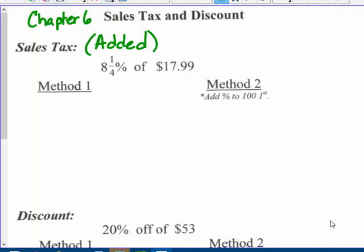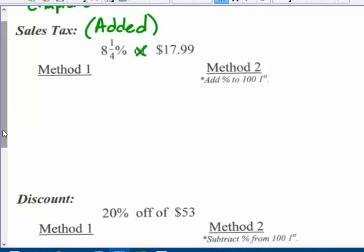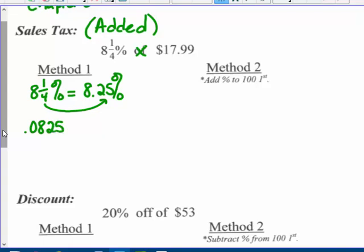I'm going to change my percent to a decimal and multiply, because of means multiply. Method one: eight and a quarter percent is the same as 8.25%. Changing this percent to a decimal, I divide by 100, moving two places to the left. So I get 0.0825 times my $17.99 purchase.